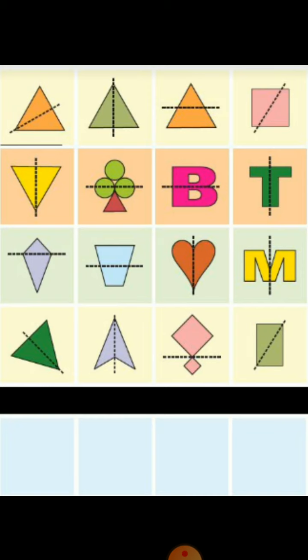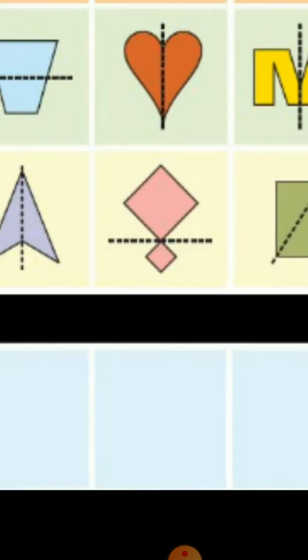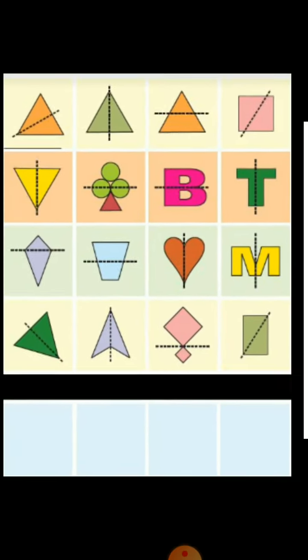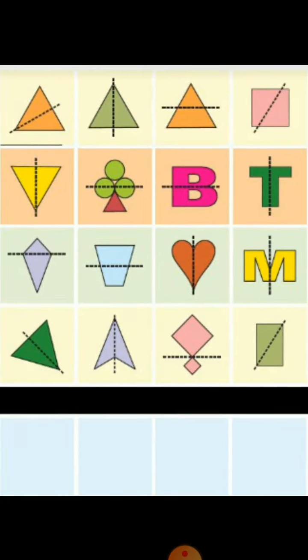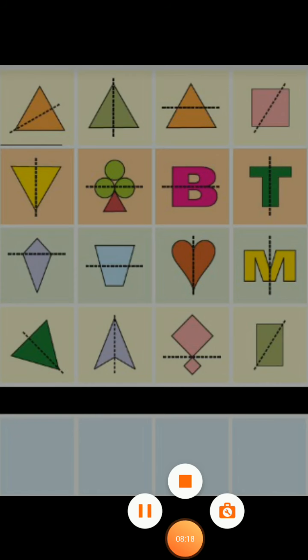Below, there is a space given. In this space, you have to draw any four shapes of your choice which are symmetrical, and by drawing the dotted line, you can divide that shape into identical halves.